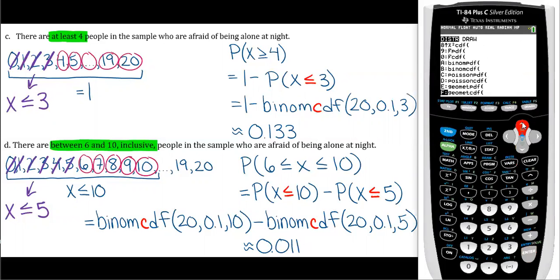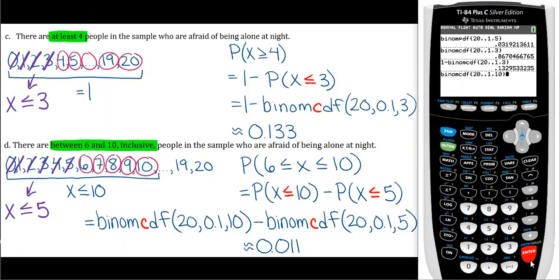So you would do second bars. Binomial CDF, let's see, the first one was 20, 0.1, and 10. Click enter, paste it, and then don't click enter again, just do minus, and then go get another one.